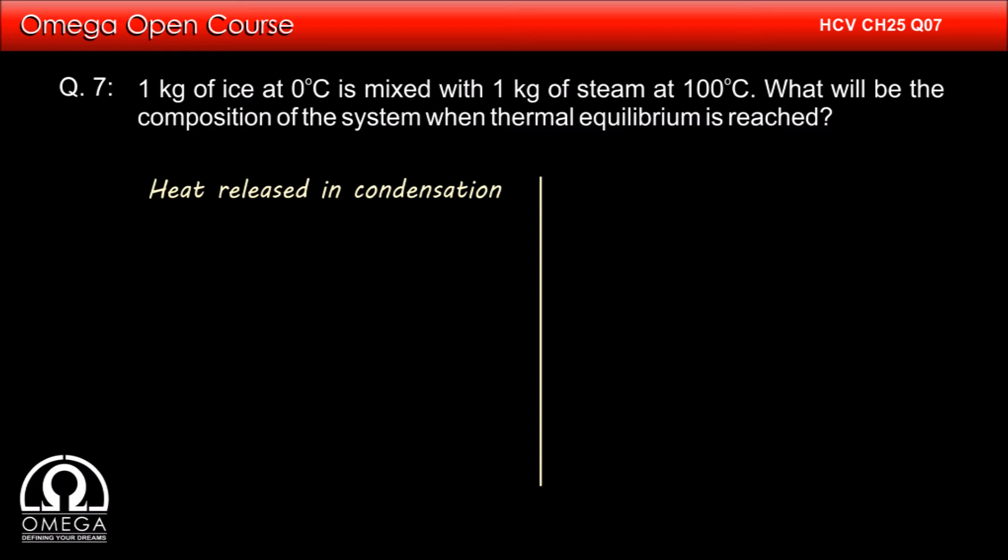Let us first find the heat released in case all the steam is condensed. The heat released will be mass of steam into the latent heat of vaporization of water. Mass is 1 kg and latent heat of vaporization for water is 2.26 into 10 to the power 6 joules per kg. Therefore, 2.26 into 10 to the power 6 joules of energy will be released if all the steam is condensed.